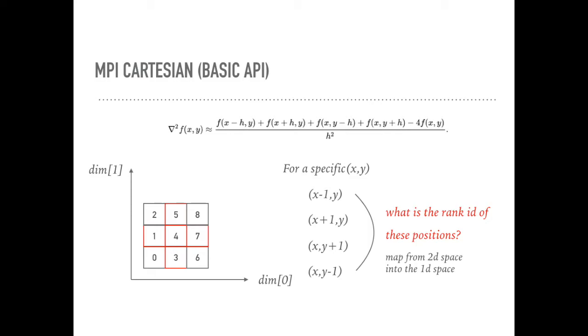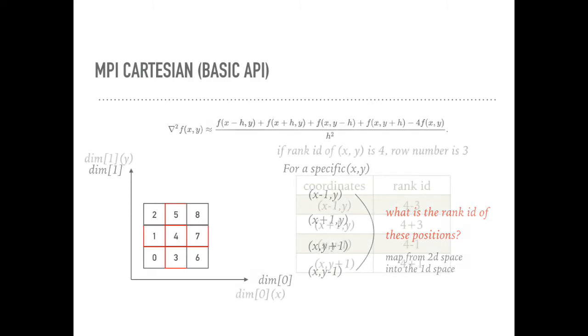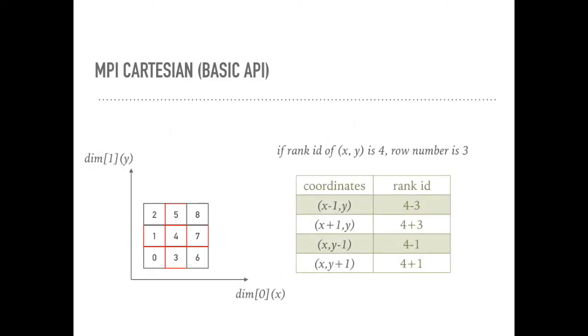If we use coordinates to index the mesh, it is easy to get all the neighbor cells. For a two-dimensional mesh, if the coordinates of the current cell is (x, y), then the neighbor cell is (x-1, y), (x+1, y), (x, y-1), (x, y+1).